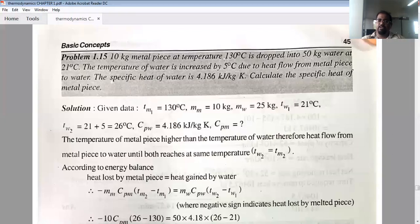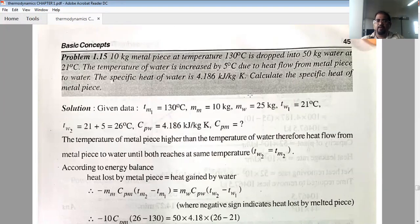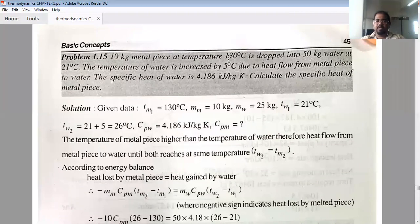So this is the next question. 10 kg metal piece at temperature of 130 degree Celsius is dropped into 50 kg water at 21 degree Celsius. So I have mass of metal 10 kg and mass of water 50 kg. I have both M. Now T1 is given to 130 degree Celsius and T1 is given to 21 degree Celsius. The temperature of water is increased by 5 degree Celsius due to heat flow from metal piece to water. So if I put this metal rod into the water, then the temperature of the water will increase 21 to 5 degree Celsius.